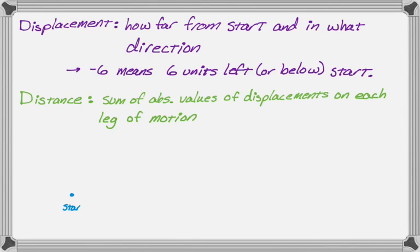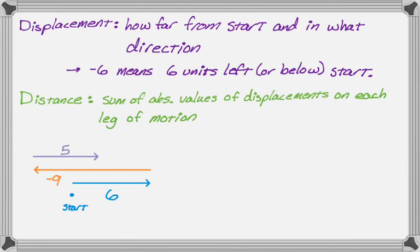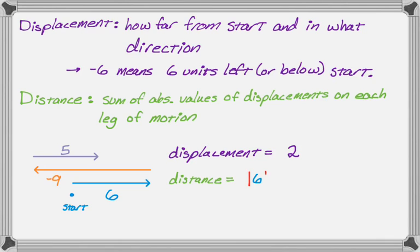Here's a little example. Starting from a point, a particle moves six units to the right, then nine units to the left (displacement of negative nine), then five units to the right again. The overall displacement is just the sum: six plus five minus nine equals two. So you're two units to the right of where you started. Distance traveled, on the other hand, requires adding up the absolute values of each leg: six plus the absolute value of negative nine plus the absolute value of five equals twenty. So this thing moved a lot, but its overall displacement was just two units.